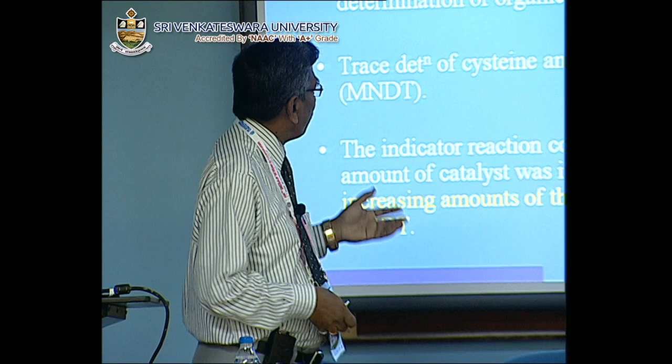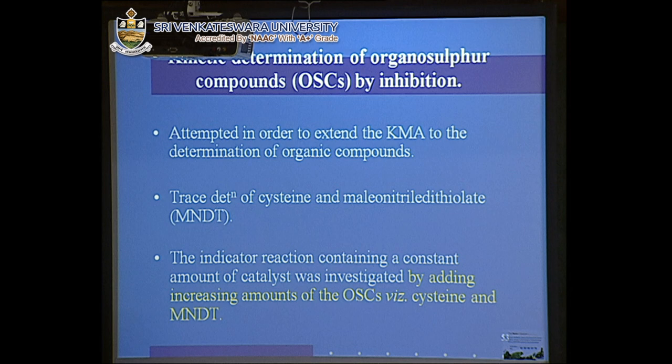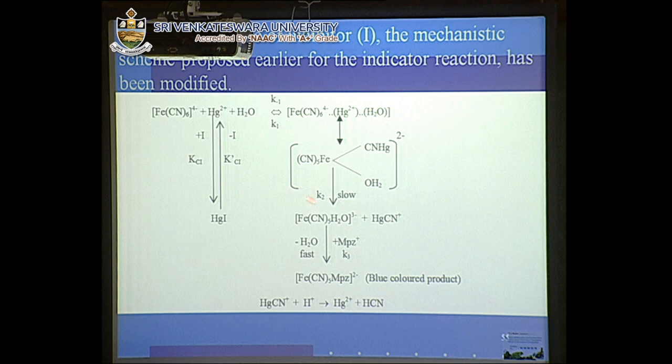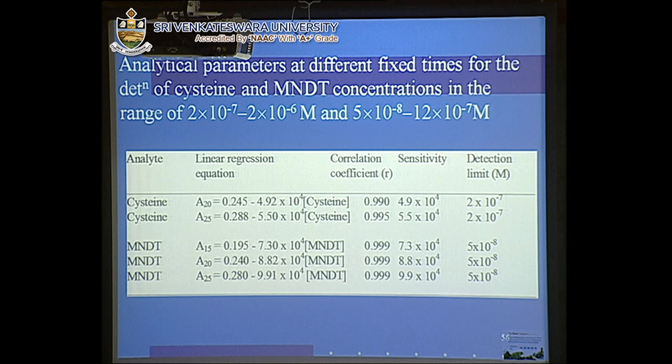We also extended the kinetic method of analysis for determination of organosulphur compounds (OSC). Several organosulphur compounds were determined, including cysteine and MNDT (malononitrile dithioamide). The same previous system was used, and a mechanism was proposed. In this case, the uncatalyzed path has been completely ignored because in the presence of the inhibitor — organosulphur compounds act as inhibitors — the uncatalyzed path becomes extremely slow and not measurable at all.